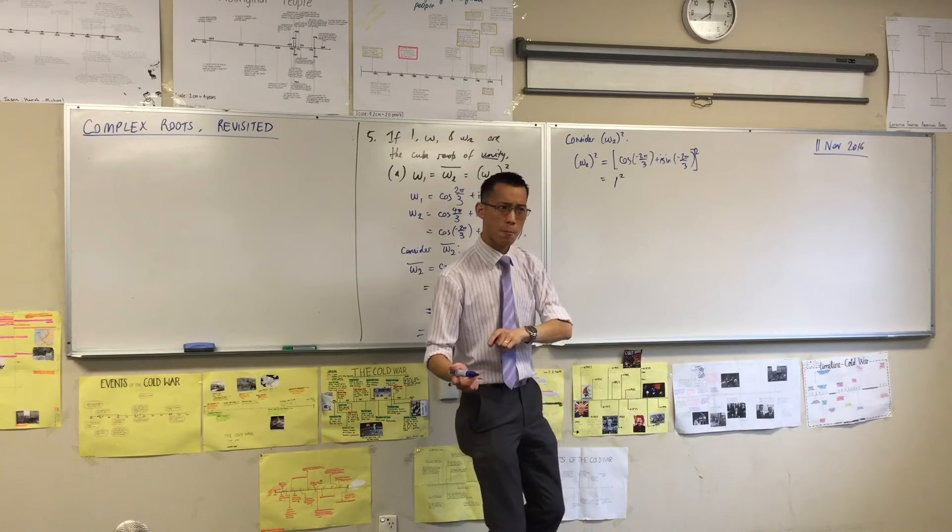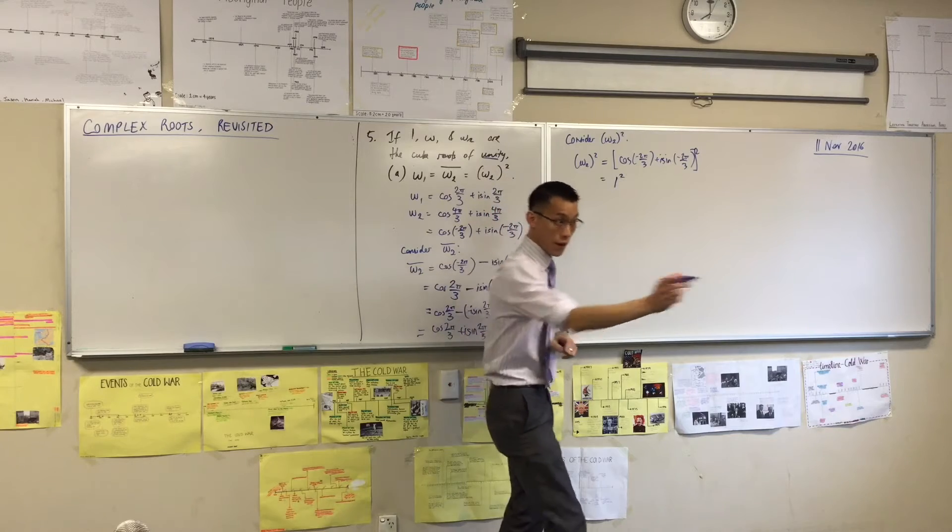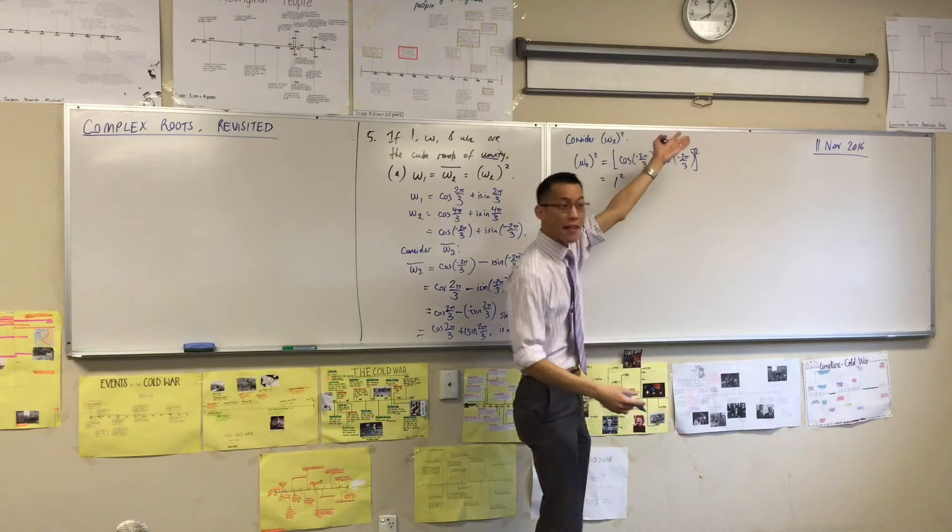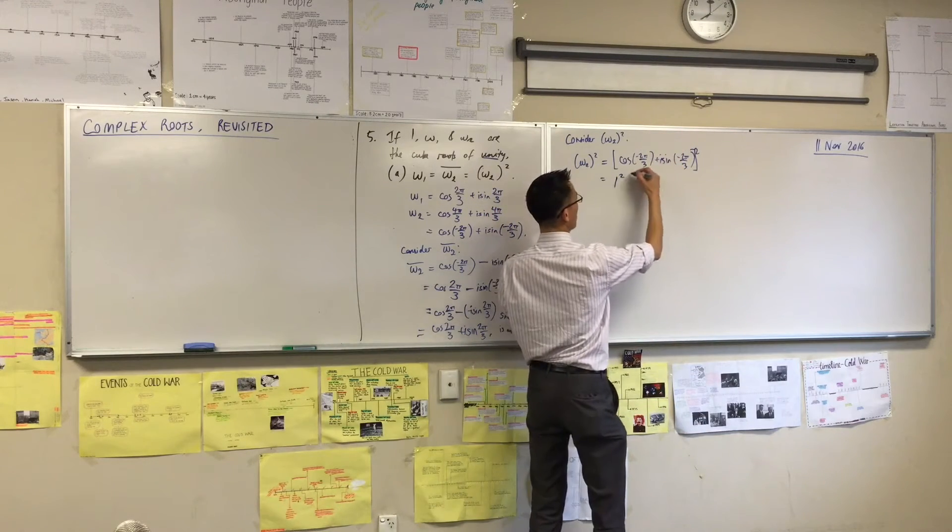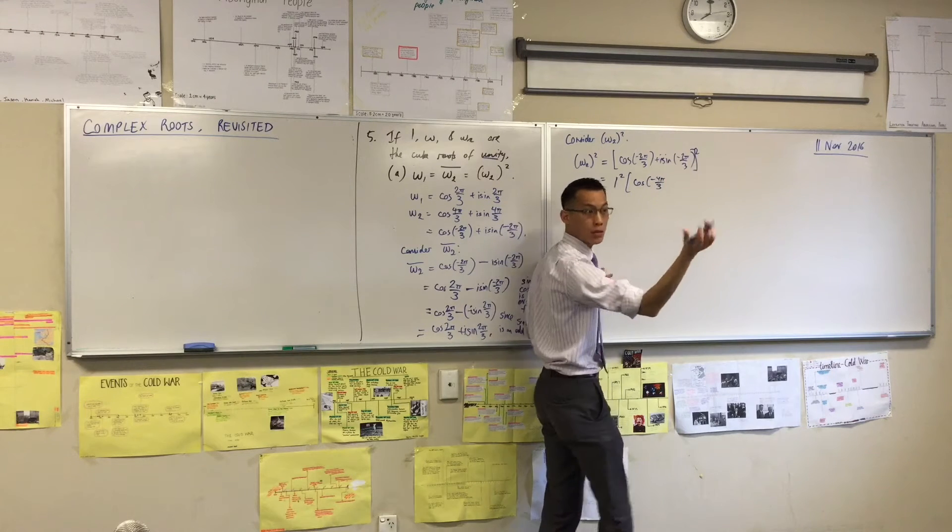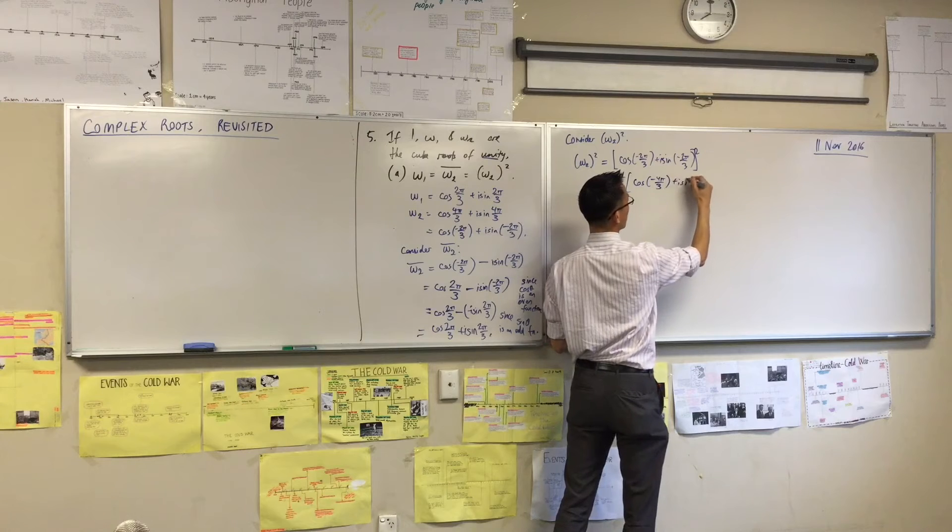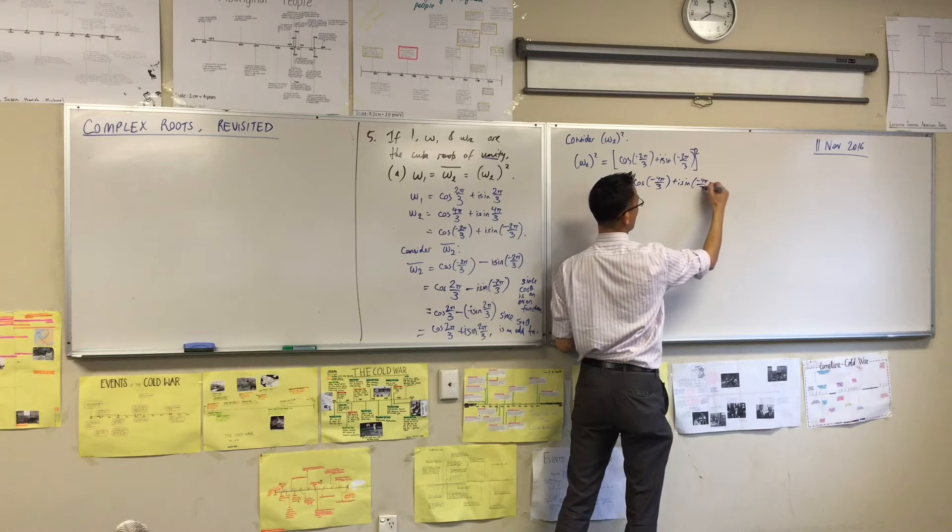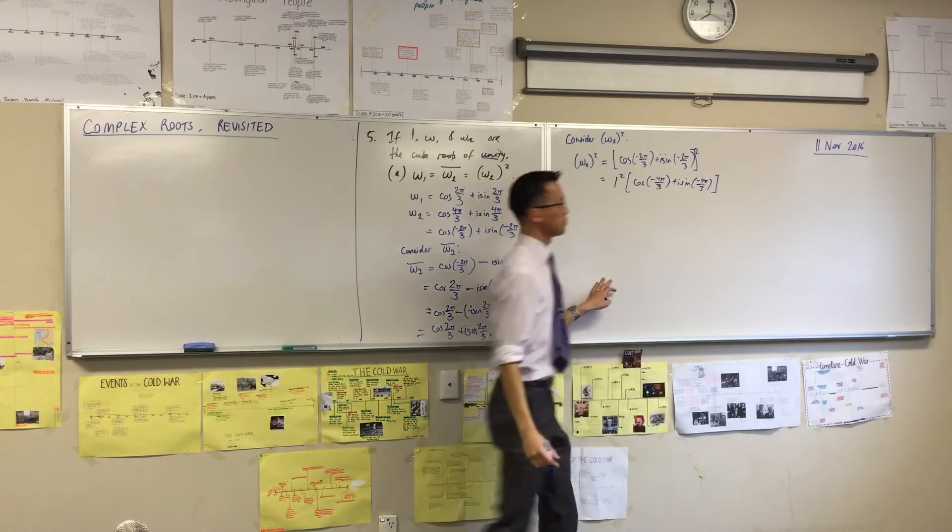What's the other thing that De Moivre's theorem tells me? Very good, I multiply the angle by that power. So I'm going to have, let's see here, cos of maybe 4π/3, because I doubled it, plus i sin. You okay with that?